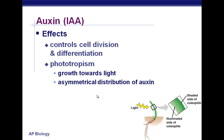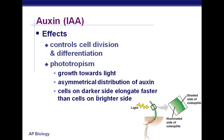Since auxins stimulate cell growth, the shaded side of the plant is growing faster than the sunny side. Those cells become longer and more numerous on the shaded side, which means that side is longer and the sunny side is shorter, so the plant starts to curve. Your longer cells cause it to curve, while the shorter cells can't expand enough, so it starts to lean towards the light. Cells on the darker side elongate faster than cells on the brighter side.